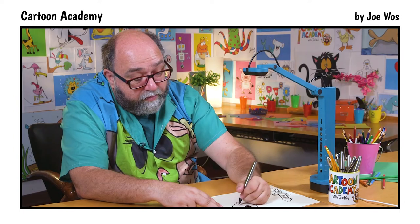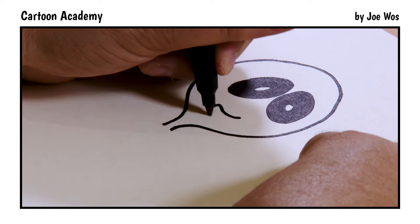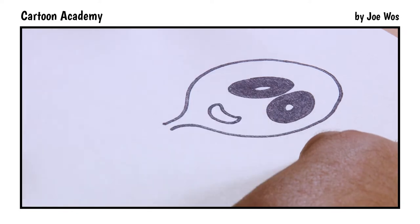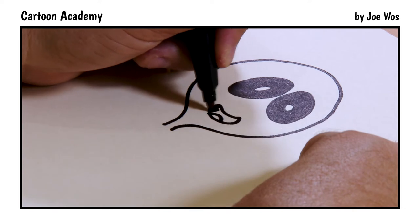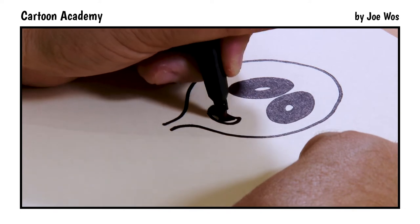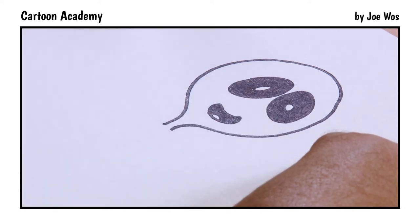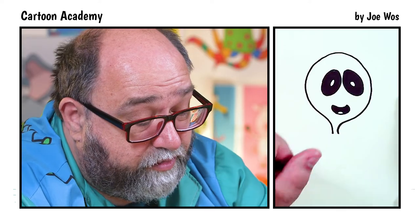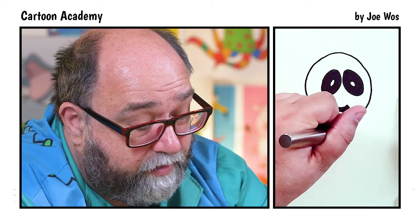And now the mouth. There's a small mouth. Little line for the tongue, and then fill that in. Now our alien shoulders. One. Two.